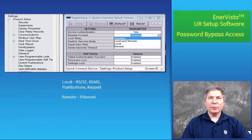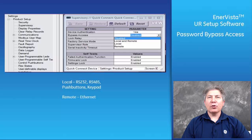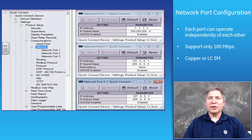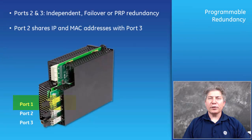Password Bypass Access: From the supervisory menu, the bypass access security feature provides easier access with no authentication or encryption for special situations. Only the supervisor or the administrator can enable this feature. We have the choice of bypassing local, remote, or both. Network Port Configuration: The new CPU module has three Ethernet ports that can have independent IP addresses or be configured for redundancy. Ethernet ports are fixed at 100 megabits per second. GOOSE messaging can be used on all ports. Port 1 is typically configured for a dedicated LAN, while ports 2 and 3 can be configured as independent, failover, or PRP redundancy.